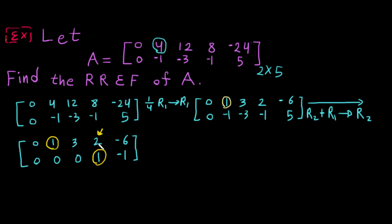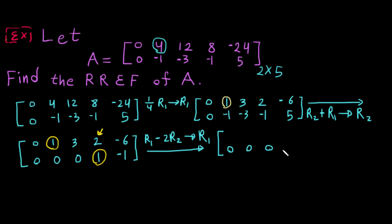Now we want to make the 2 above this leading one become zero: 2 minus 2 gives zero, so we multiply row 2 by 2 and subtract. Therefore, we do R1 minus 2·R2 into R1. We don't change row 2, so we write it the same: 0, 0, 0, 1, minus 1.